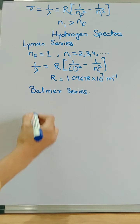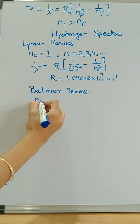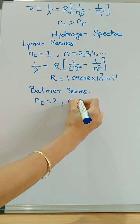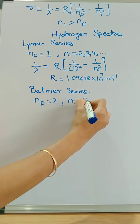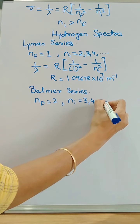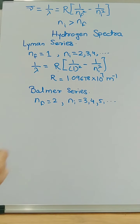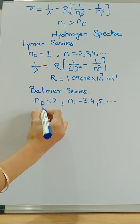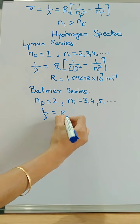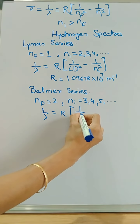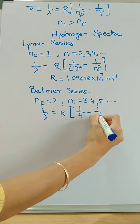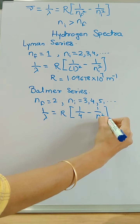For Balmer series, nf is 2 and ni will have values more than 2, that is 3, 4, 5 and onward. The equation becomes 1/λ = R × (1/4 − 1/ni²).